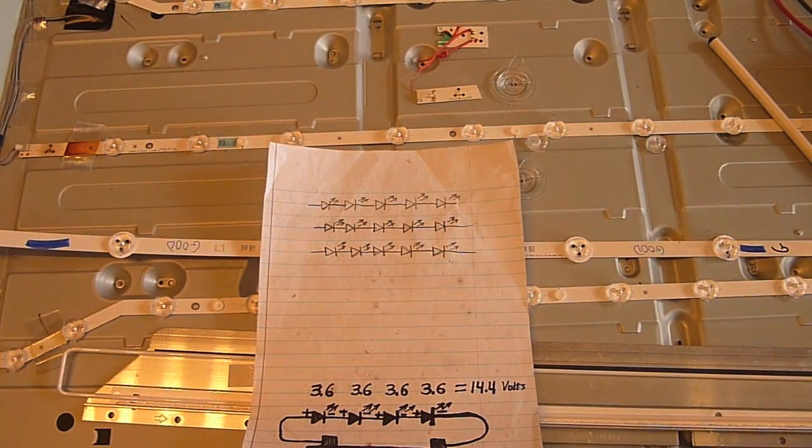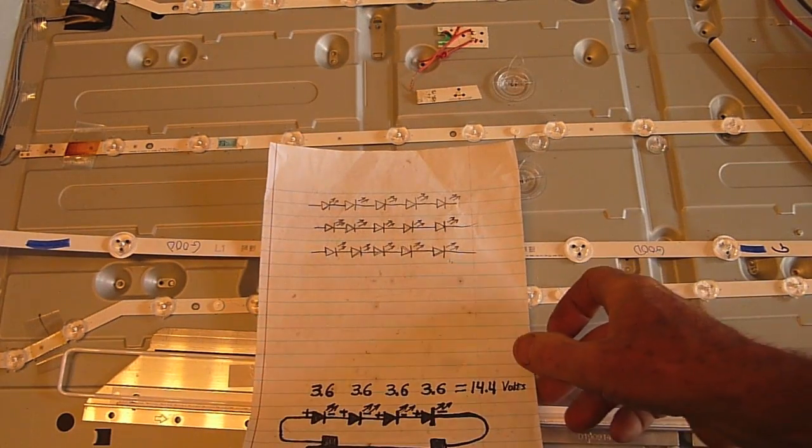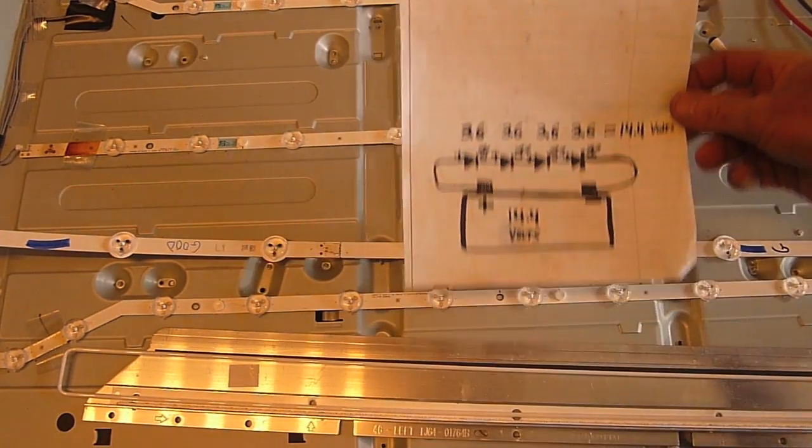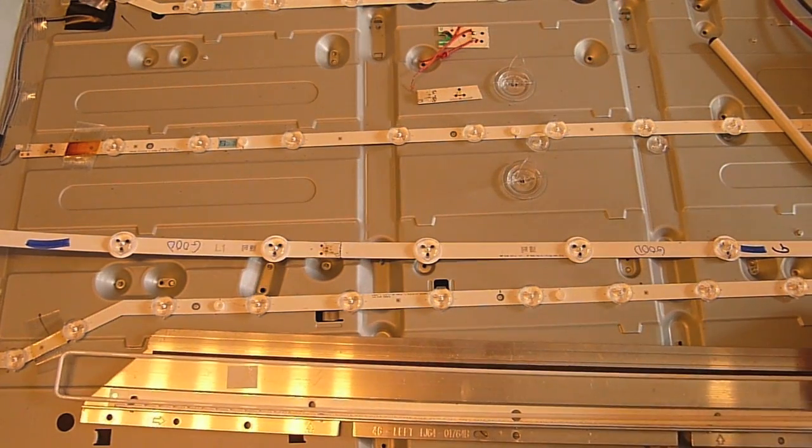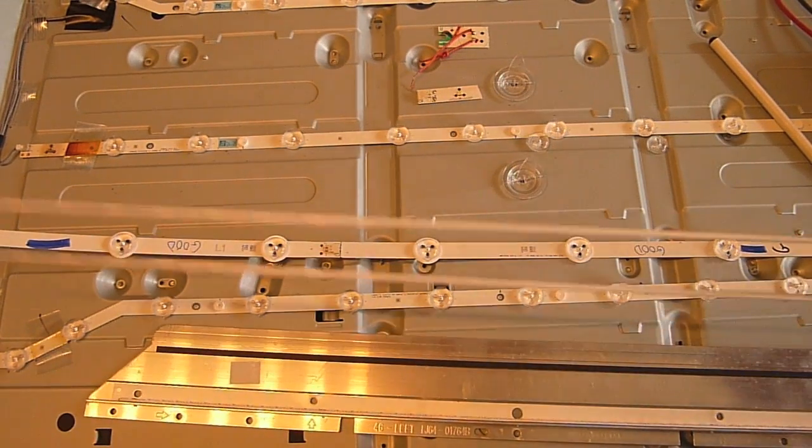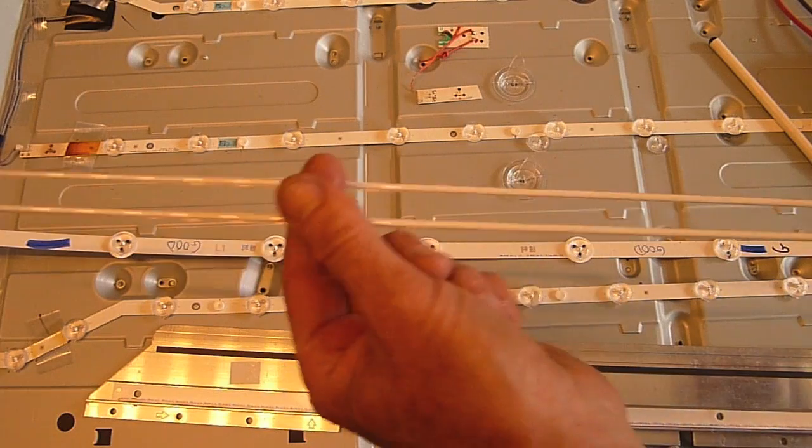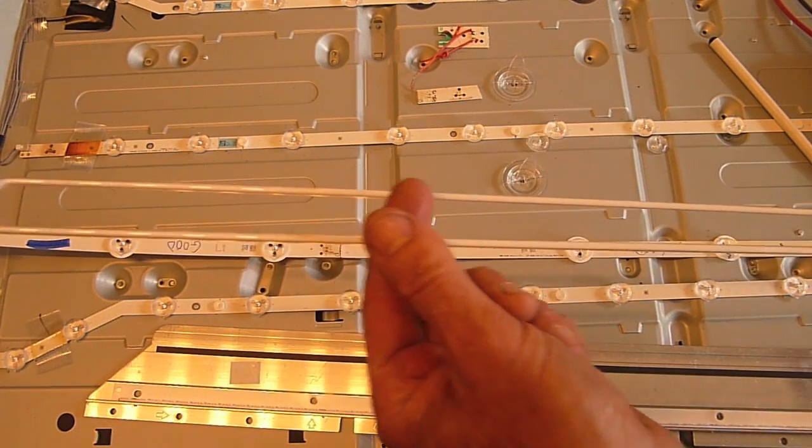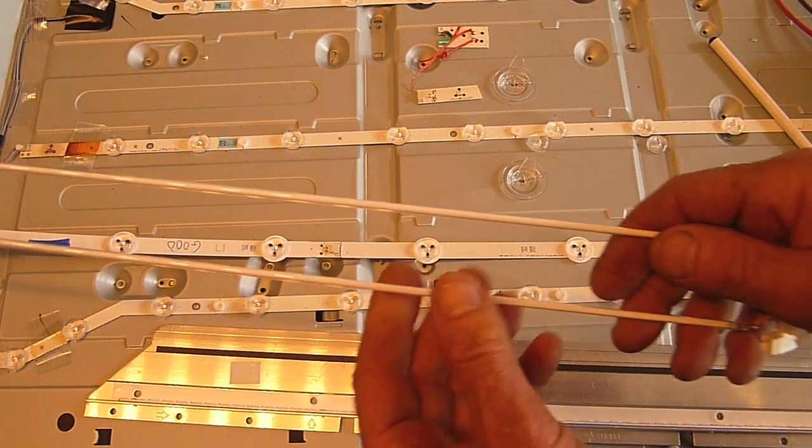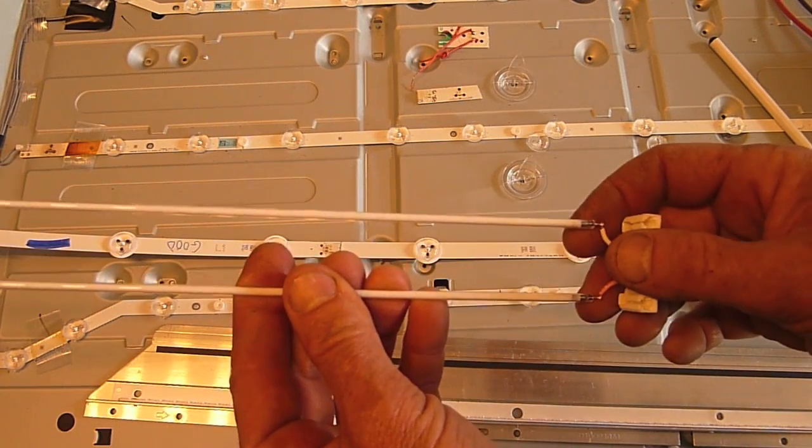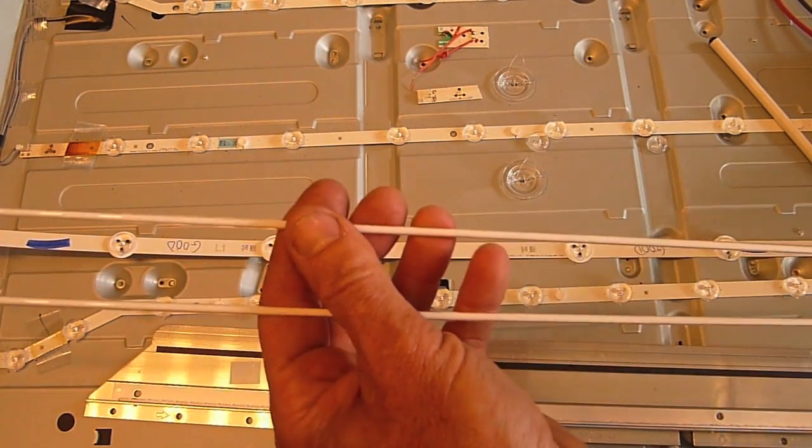In this video I want to talk about some of the problems I've been encountering with these new LED backlights used in LCD TVs. As most of you know, we started out using cold cathode fluorescent lamps which were thin fluorescent tubes, and they had their problems but seemed fairly reliable for the most part.